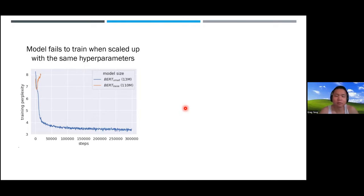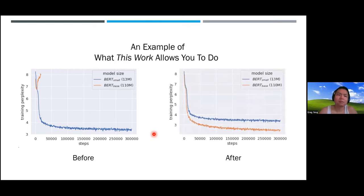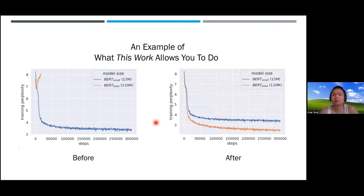This uncertainty lingers and you can't tell whether some modification or new idea is actually good at large scale. What this work allows you to do is set those hyperparameters automatically. If hyperparameters really are the issue, you would be able to get a nice training curve on the large model. Underlying this is the Maximal Update Parameterization, abbreviated MuP—a principled way of scaling initialization and learning rate with model size.